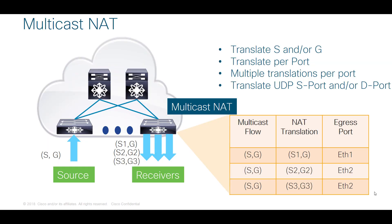We've added the capability to do flexible multicast NAT on Cisco's CloudScale ASIC. With this capability, we have the ability to translate an incoming source group, say S,G, into different combinations of source and group addresses on different egress interfaces.